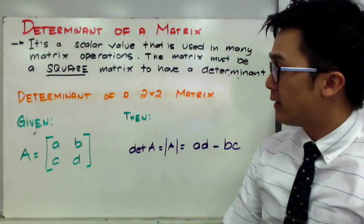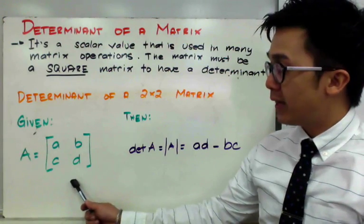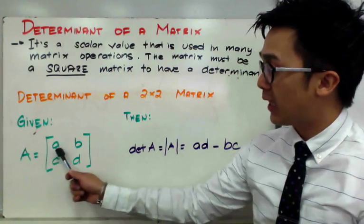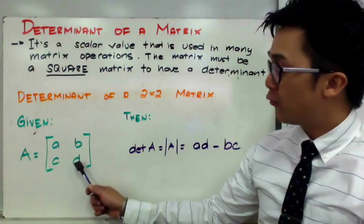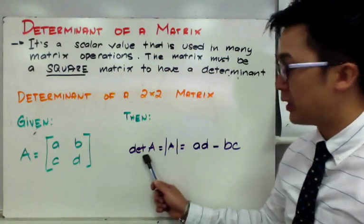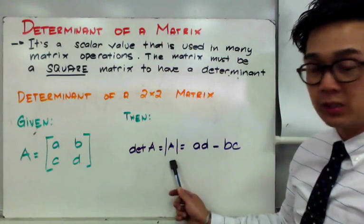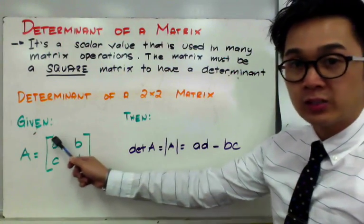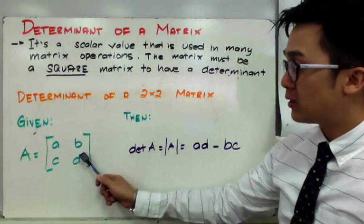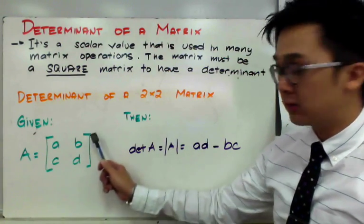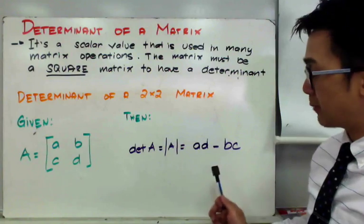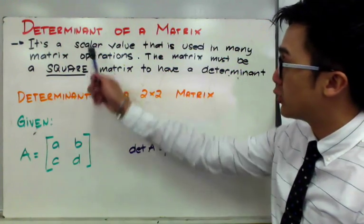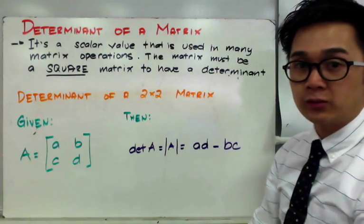Starting with a given 2x2 matrix A, which contains elements A, B, C, D, the formula for finding the determinant — given by this notation — is equal to the product of the first diagonal minus the product of the second diagonal. So we'll have A times D minus B times C. This is the formula we are using for finding the determinant of a 2x2 matrix.